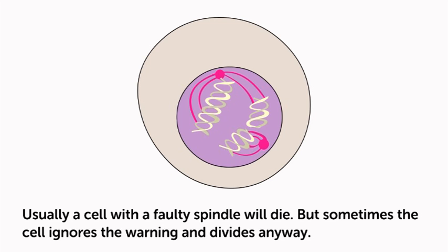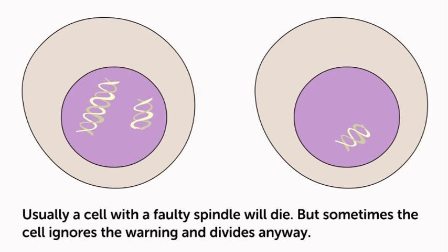Usually, a cell with a faulty spindle will die, but sometimes the cell ignores the warning and divides anyway.